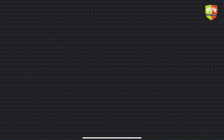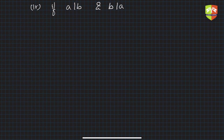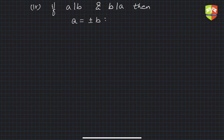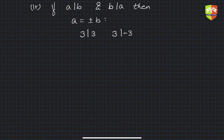The fourth sub-part says: if a divides b and b divides a, then the only possibility is a = ±b. For instance, 3 divides 3 or 3 divides −3, so a is either equal to b or a is equal to −b.